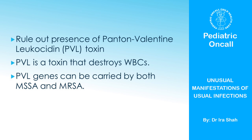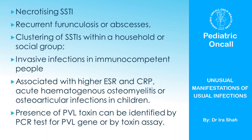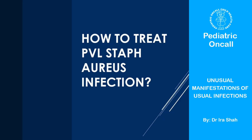You have to think of a condition called PVL toxin-producing Staphylococcus aureus. It's a toxin that destroys white blood cells. So whenever you have a Staph infection with initial leukopenia, think of PVL. These PVL genes are carried by both MSSA and MRSA. When you suspect PVL Staph, look for: necrotizing skin and soft tissue infection, recurrent abscesses with family members passing infection to each other, an immunocompetent child with severe infection, high ESR, high CRP, and particularly osteomyelitis. To diagnose PVL you need a genetic test or a toxin assay — which are not widely available — so most of the time you'll suspect PVL on clinical grounds.